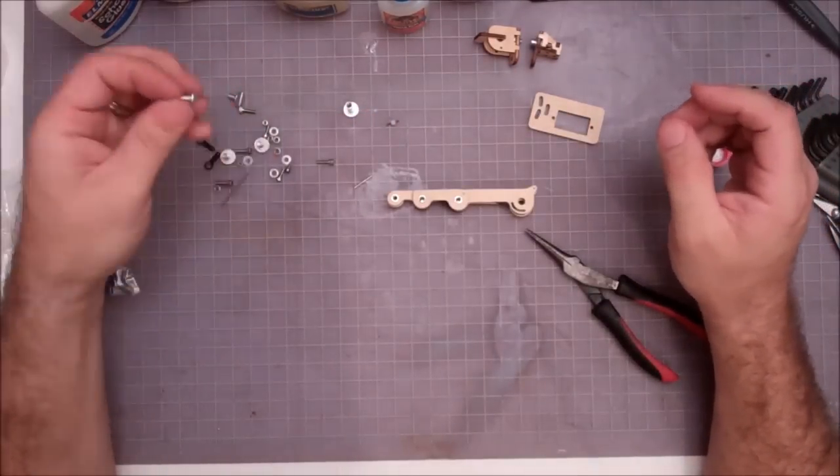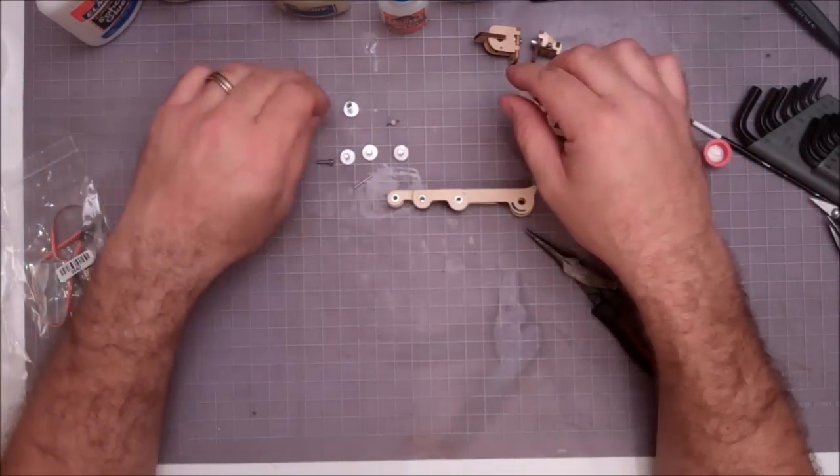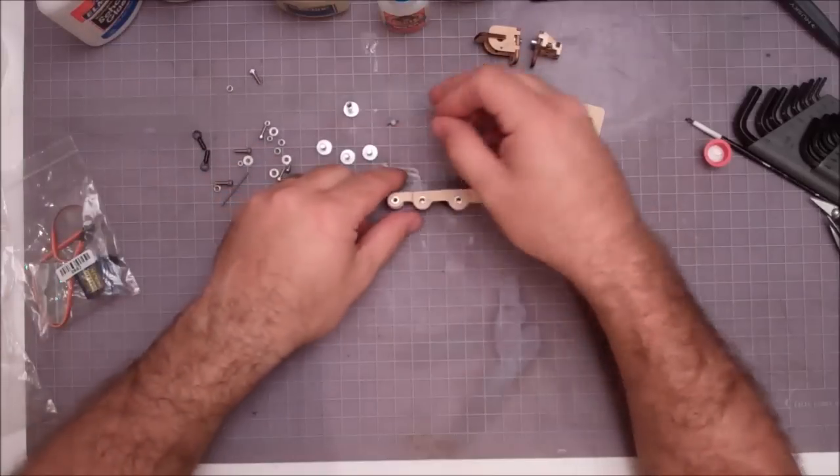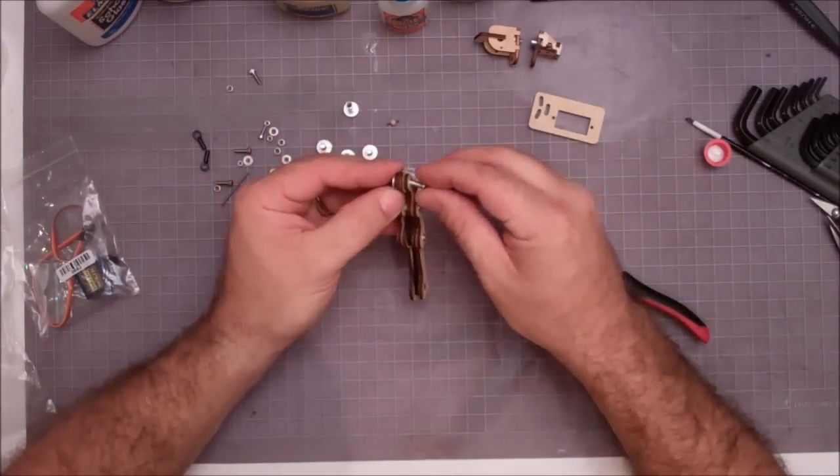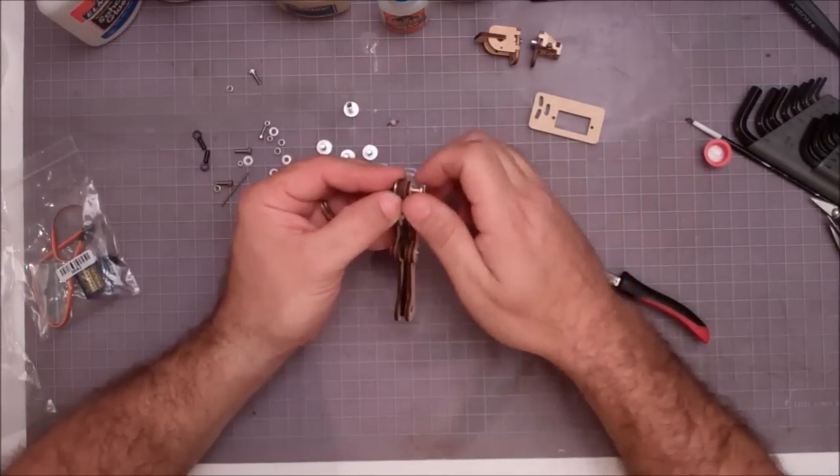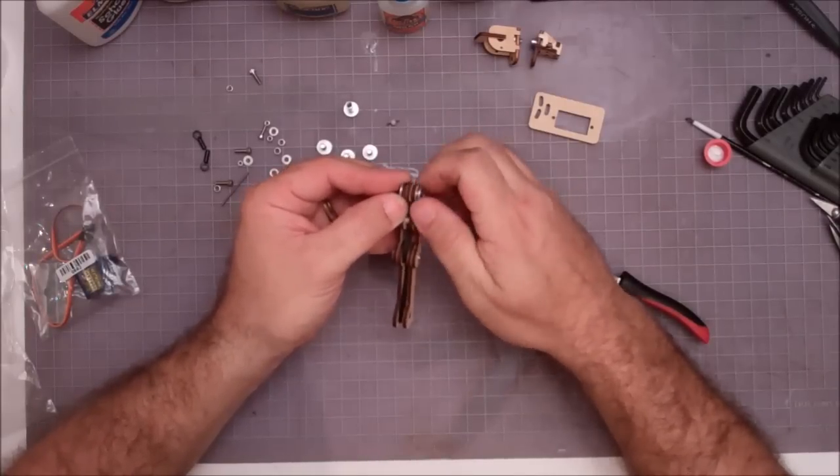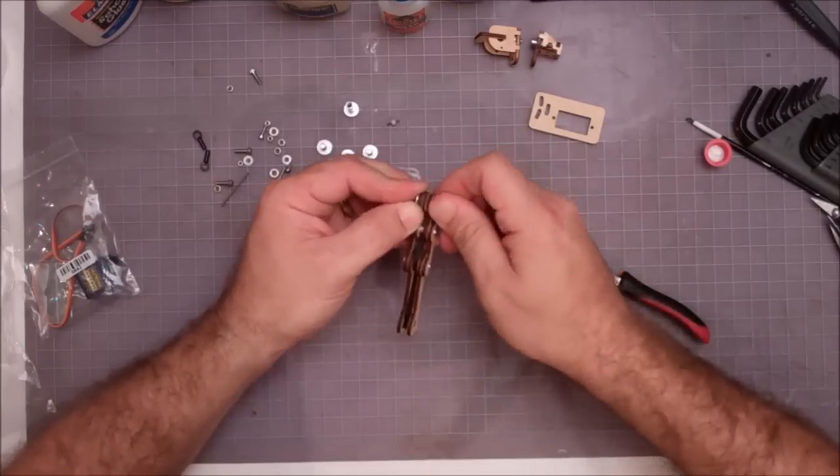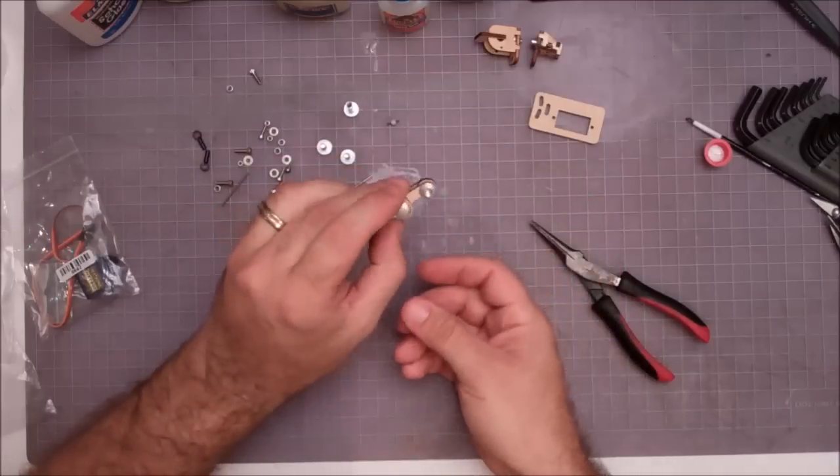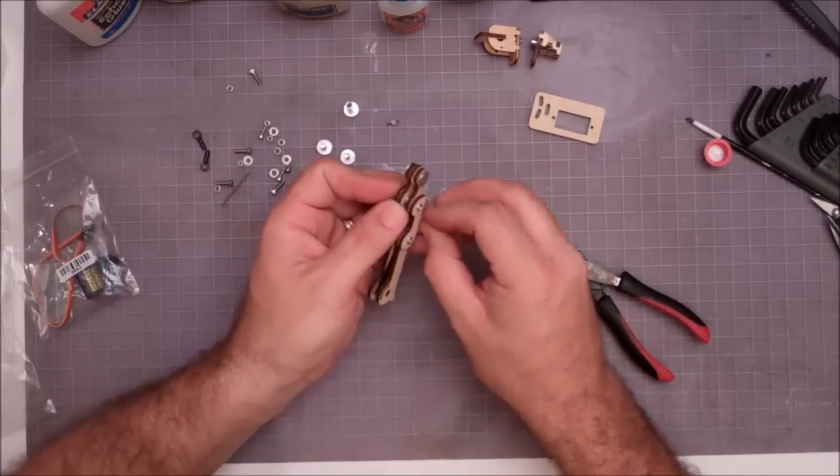Once we've got those sides on, we can then simply take - now the rest of our binding post screws are all going to be the same length, so it's not critical which one goes where. We just take these posts and we screw them in. Just kind of screw them down tight. What I'm doing is I'm pushing my finger against the backside of the binding post as I screw the screw in.